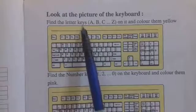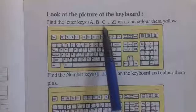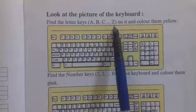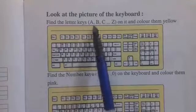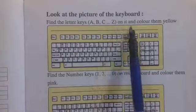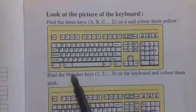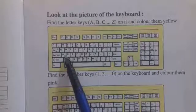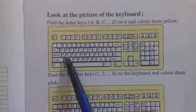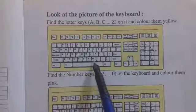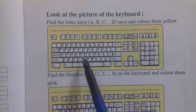Find the letter keys A, B, C... यहाँ पर छोटे dots दिया है, मतलब A to Z. Find the letter keys A to Z on it and color them yellow. आपको A से Z तक के जो letter keys हैं, उनको yellow color देना है। A से Z तक कहाँ कौन-कौन सी keys हैं, उन keys को yellow color देना है।